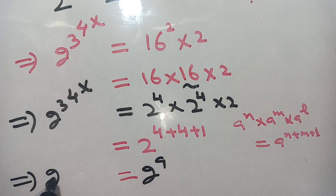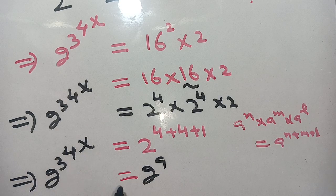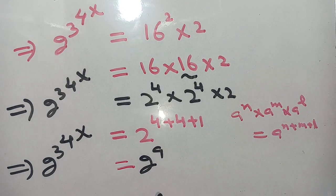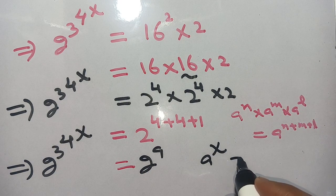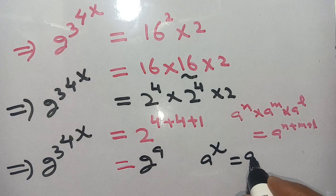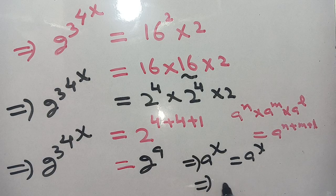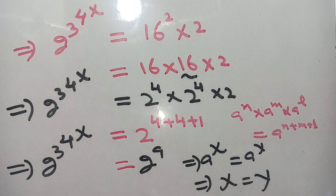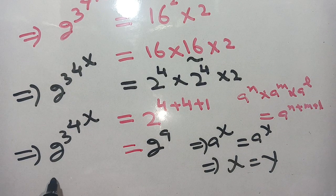Thus 2 raise to power 3 raise to power 4 raise to power x is equal to 2 raise to power 9. We know that if a raised to power x is equal to a raised to power y, this implies x is equal to y. Now applying this identity here, we get 3 raise to power 4 raise to power x is equal to 9.